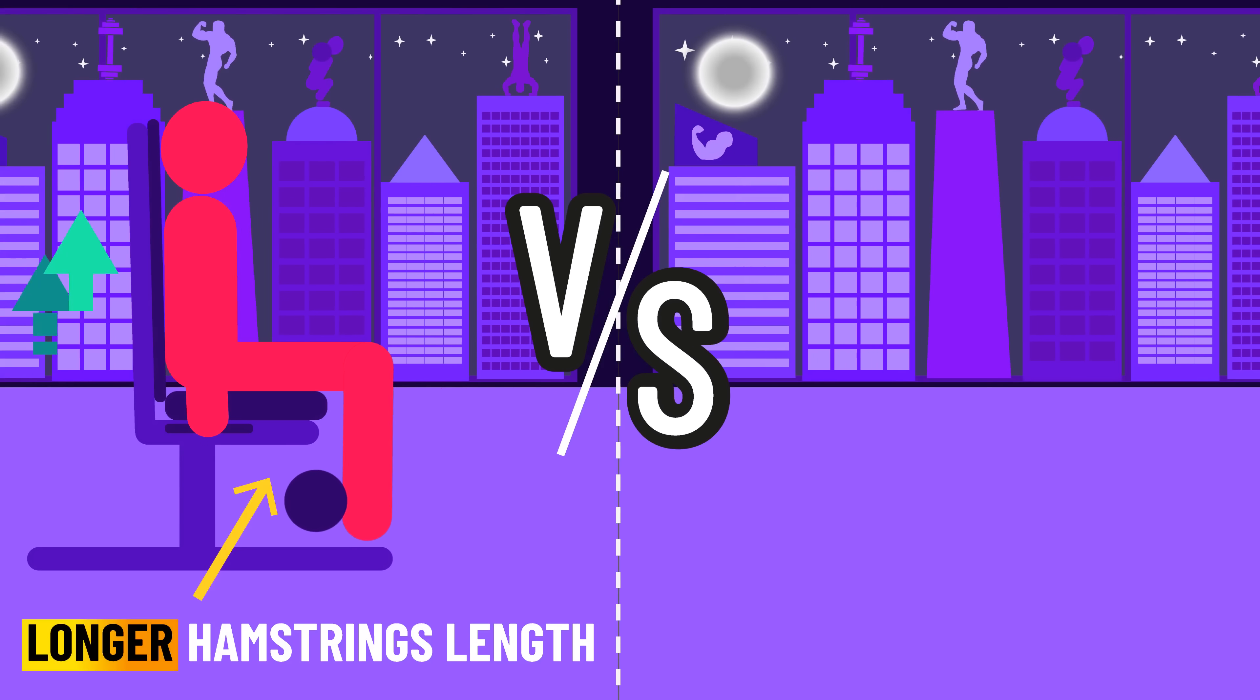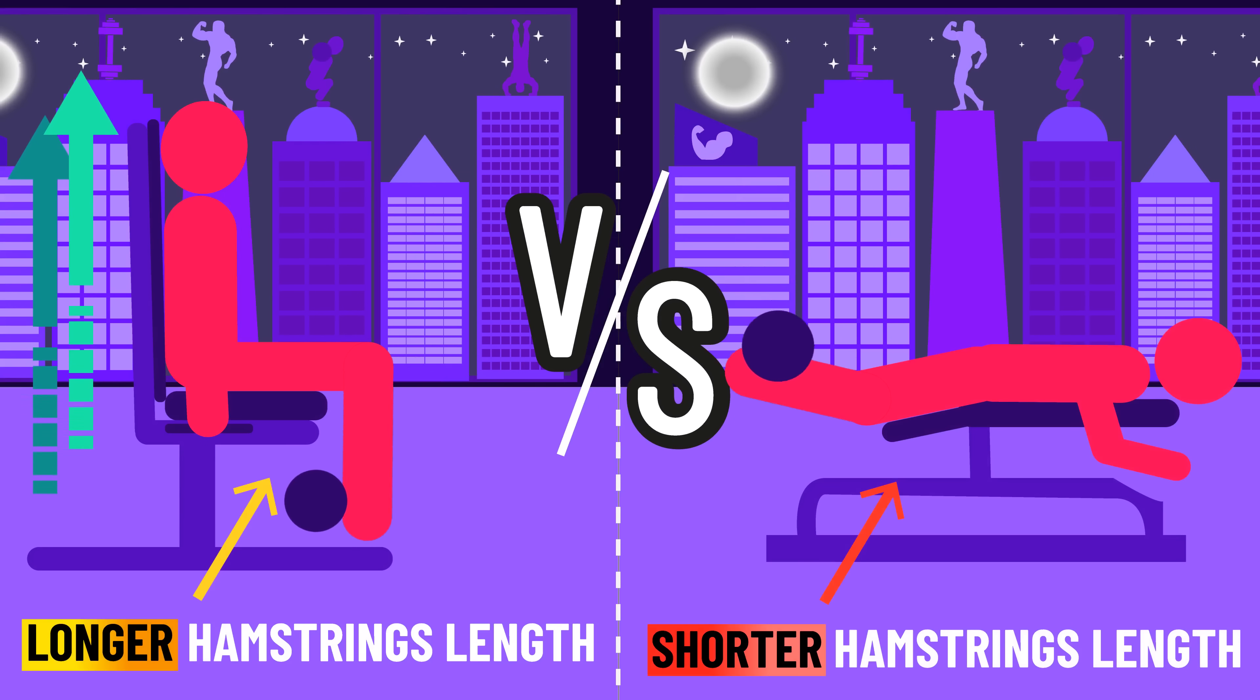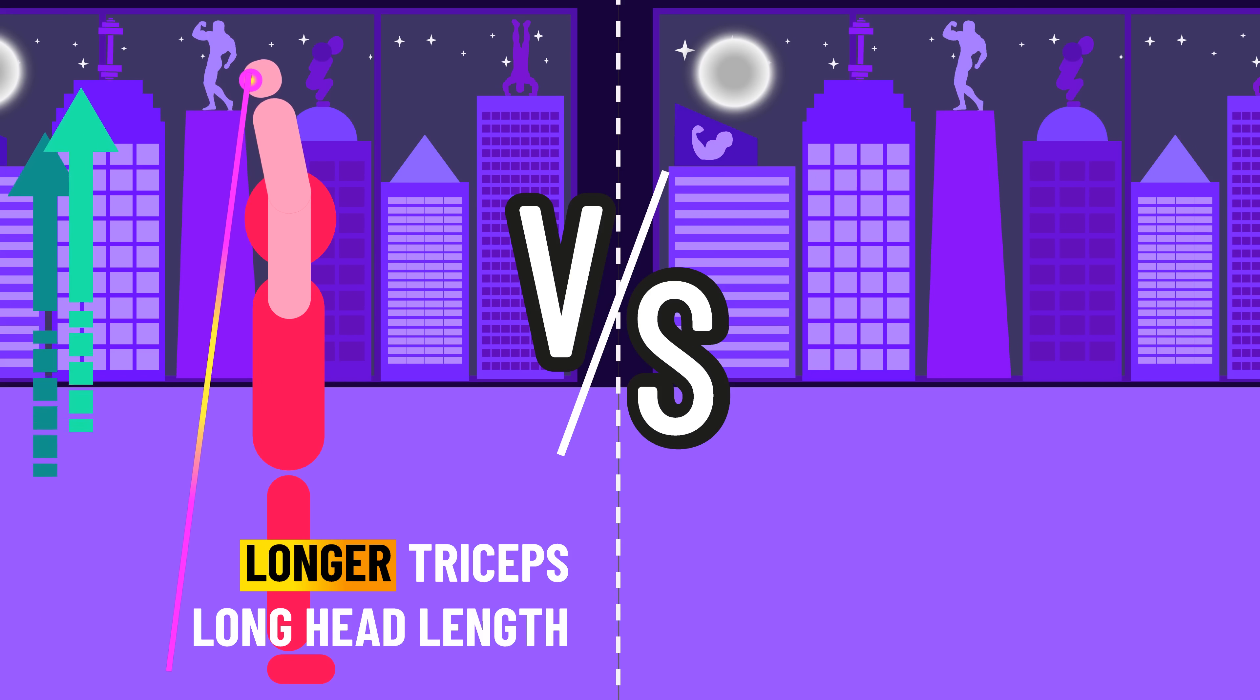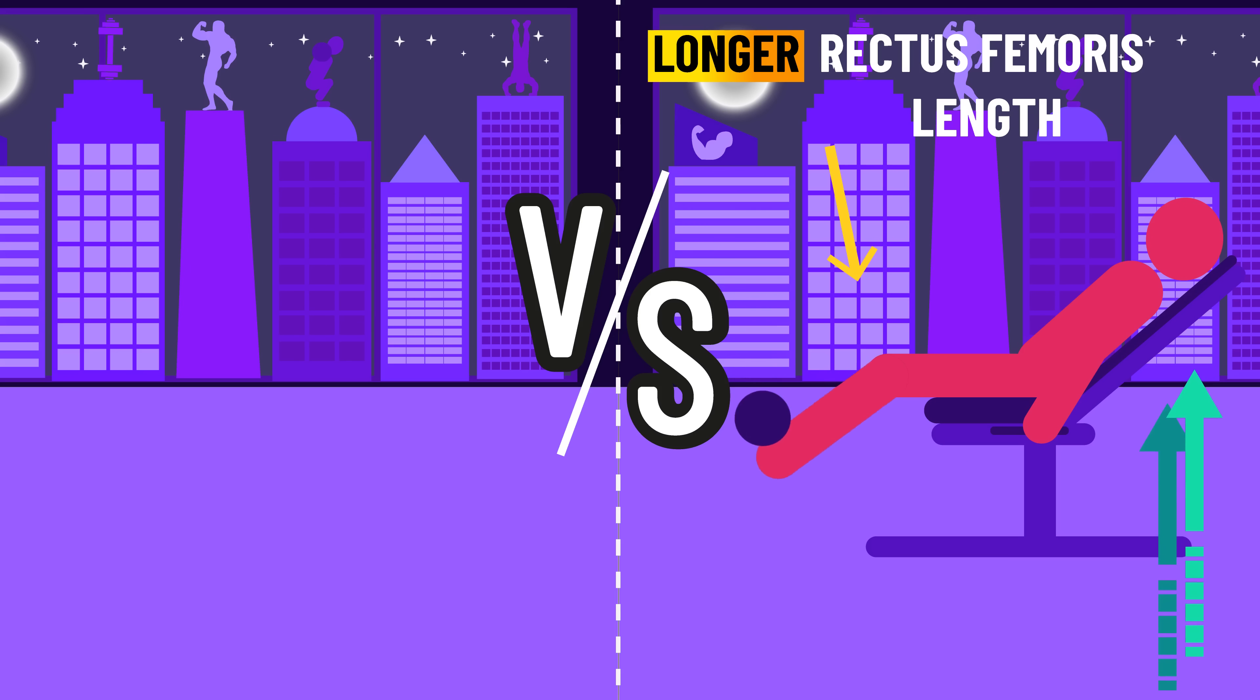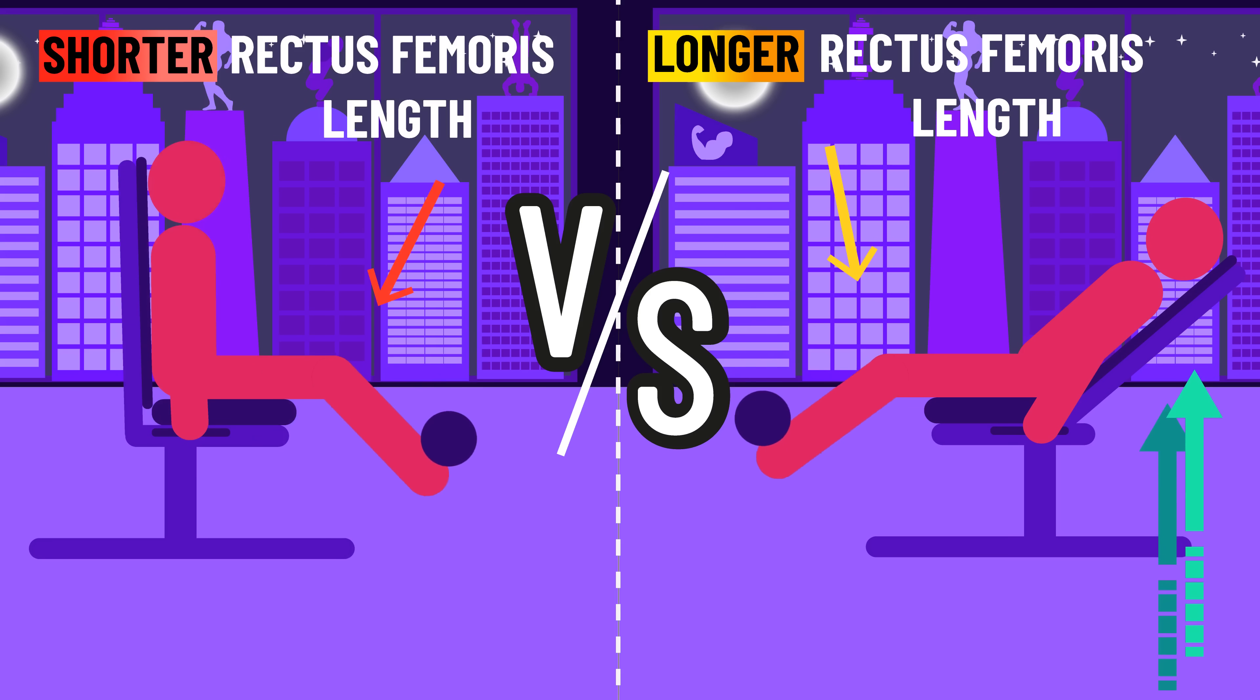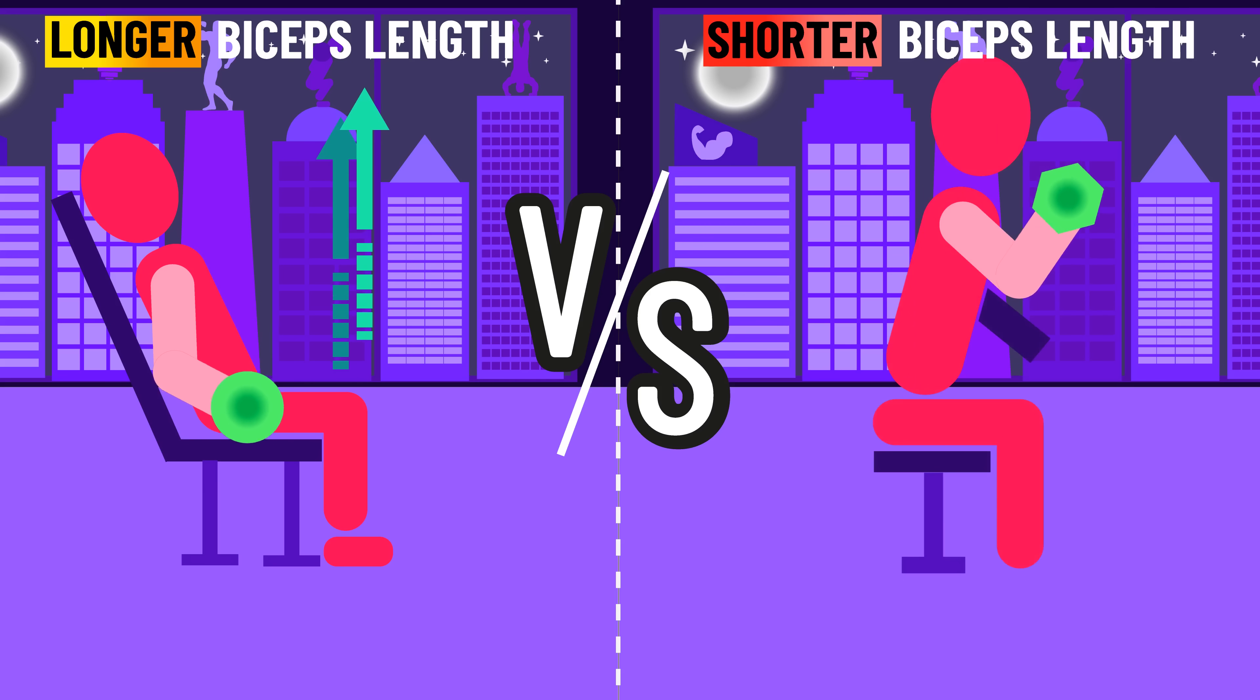seated leg curls built more muscle than lying leg curls, overhead extensions built more muscle than pushdowns, leaning back leg extensions built more muscle than normal leg extensions, and inclined curls built more muscle than preacher curls.